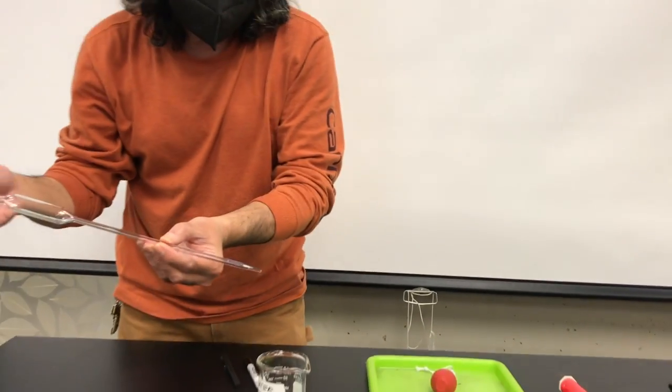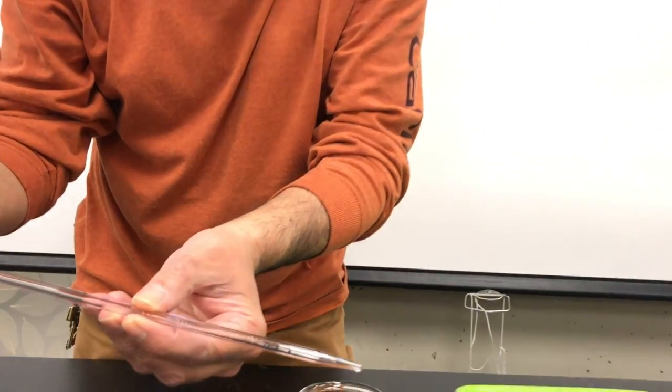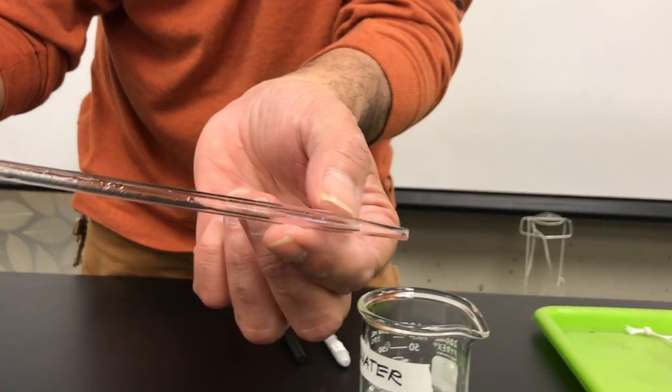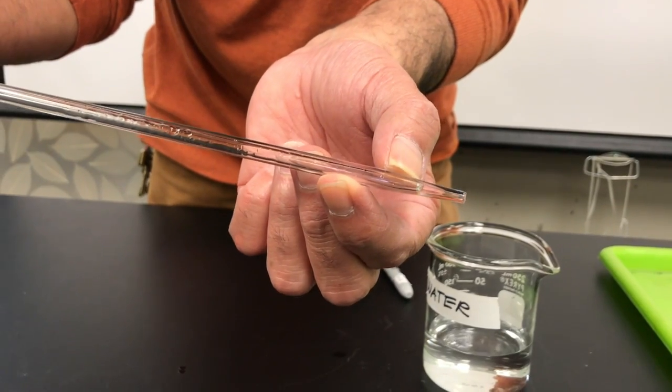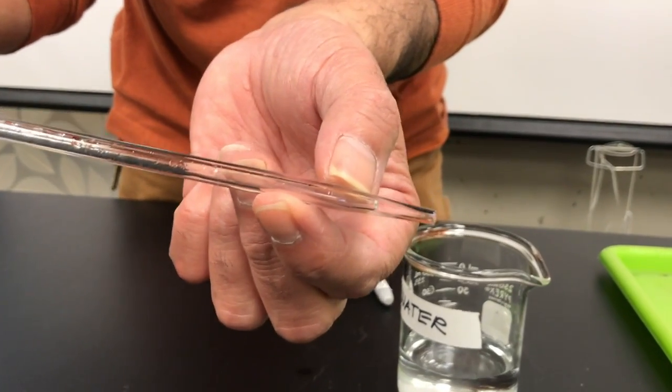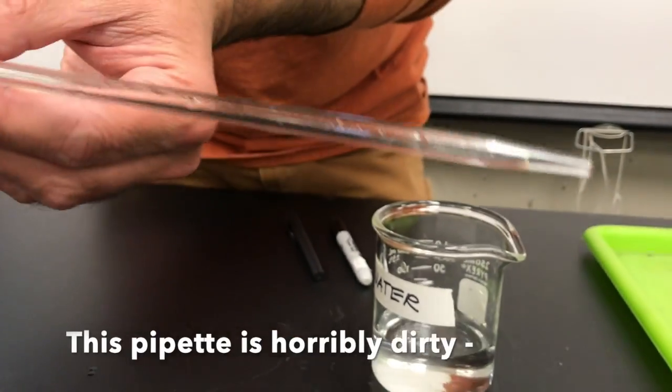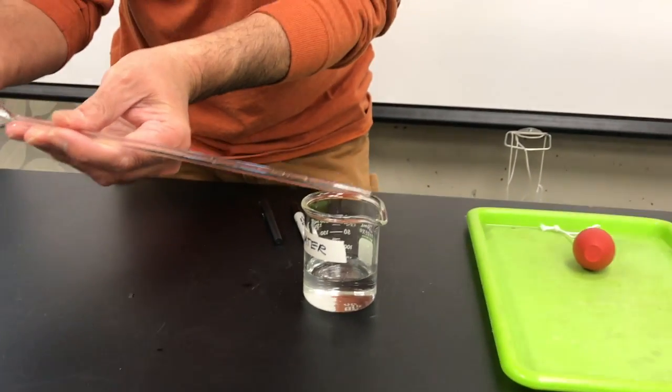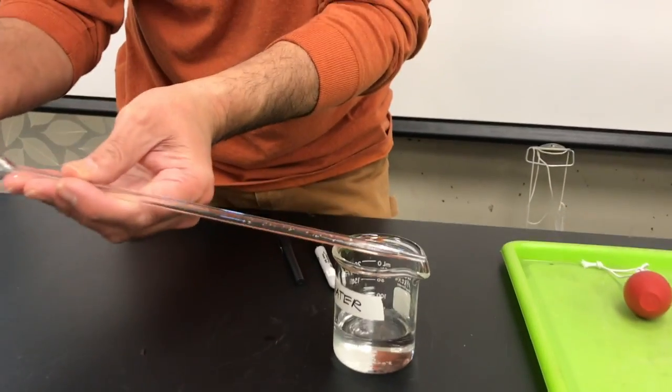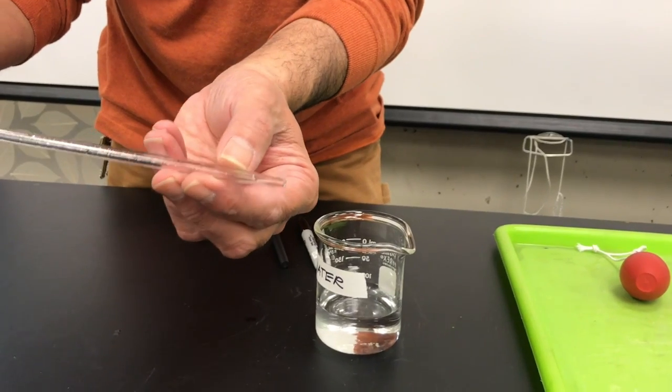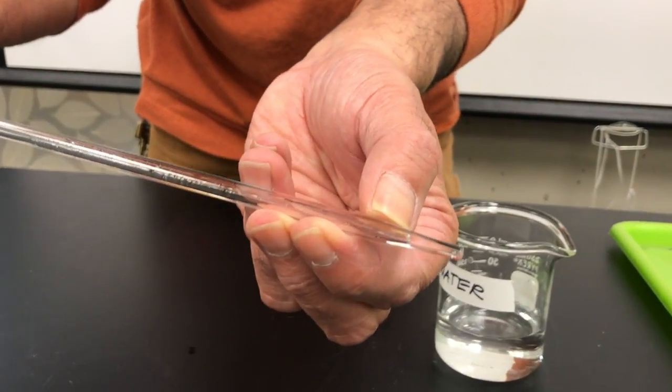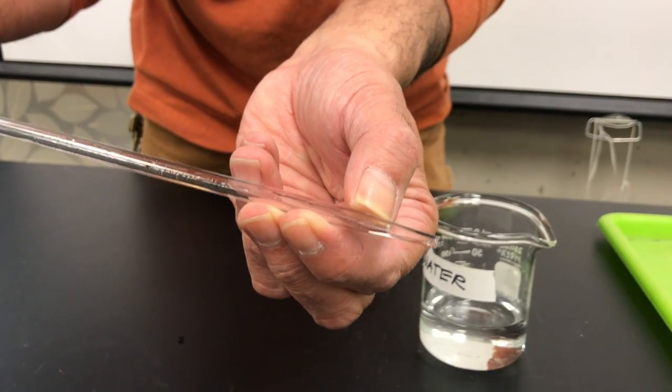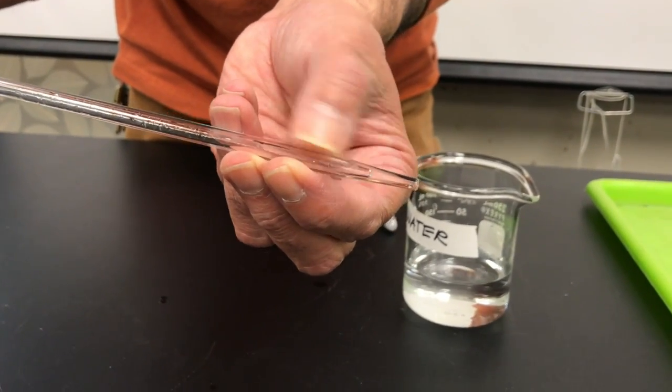So what I want you to notice is that when you're finished, there's going to be a little bit of liquid left on the tip of the burette and that is exactly what you want. So the way that these are calibrated are to deliver 25 mls, accounting for the fact that some of the liquid is going to be left behind on the tip of the pipette.